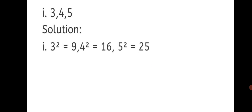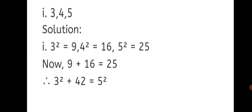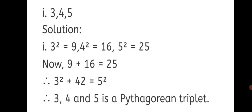Our first step is to write the squares: 3 square is equal to 9, 4 square is equal to 16, and 5 square is equal to 25. The second step is to add the squares of the smaller numbers: 9 plus 16 gives us 25. The square of the biggest number, 5 square, is also 25. Therefore 3 square plus 4 square is equal to 5 square. Hence, 3, 4, and 5 is a Pythagorean triplet.